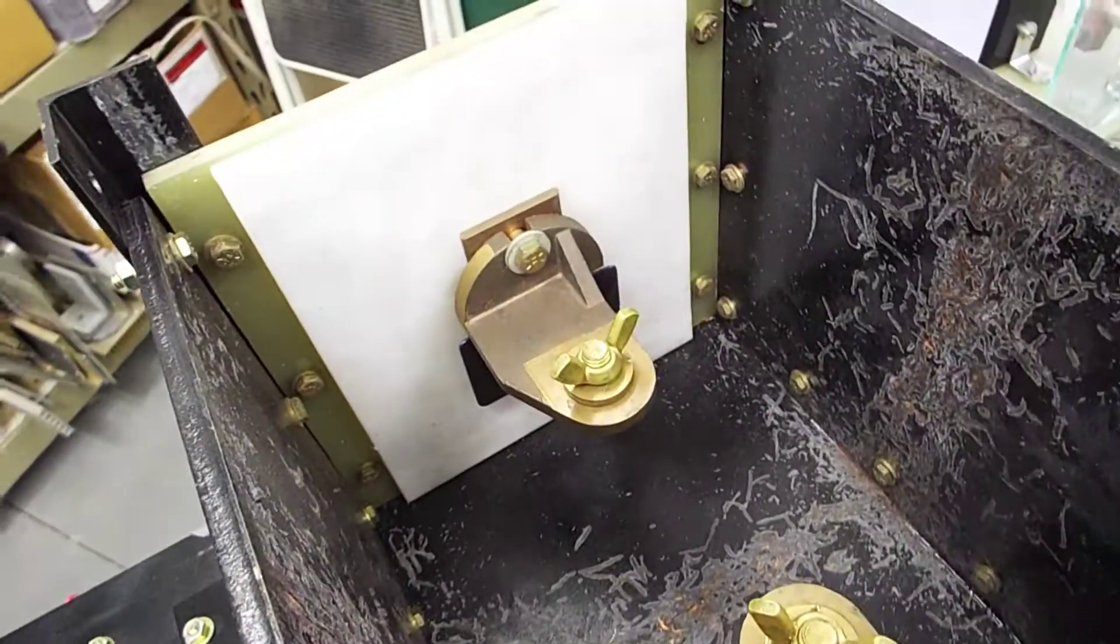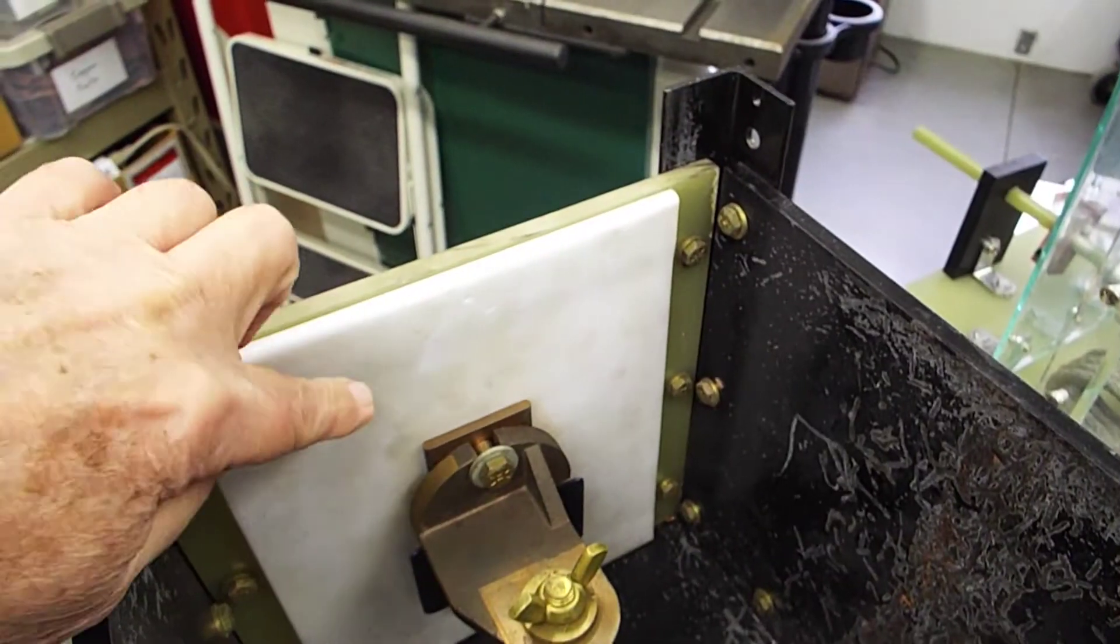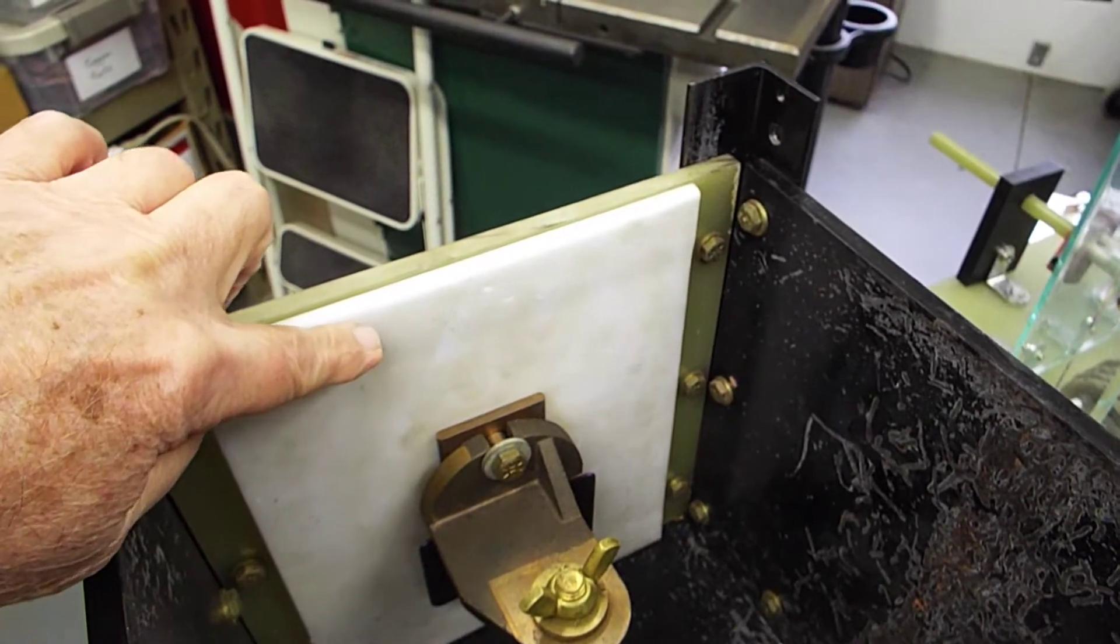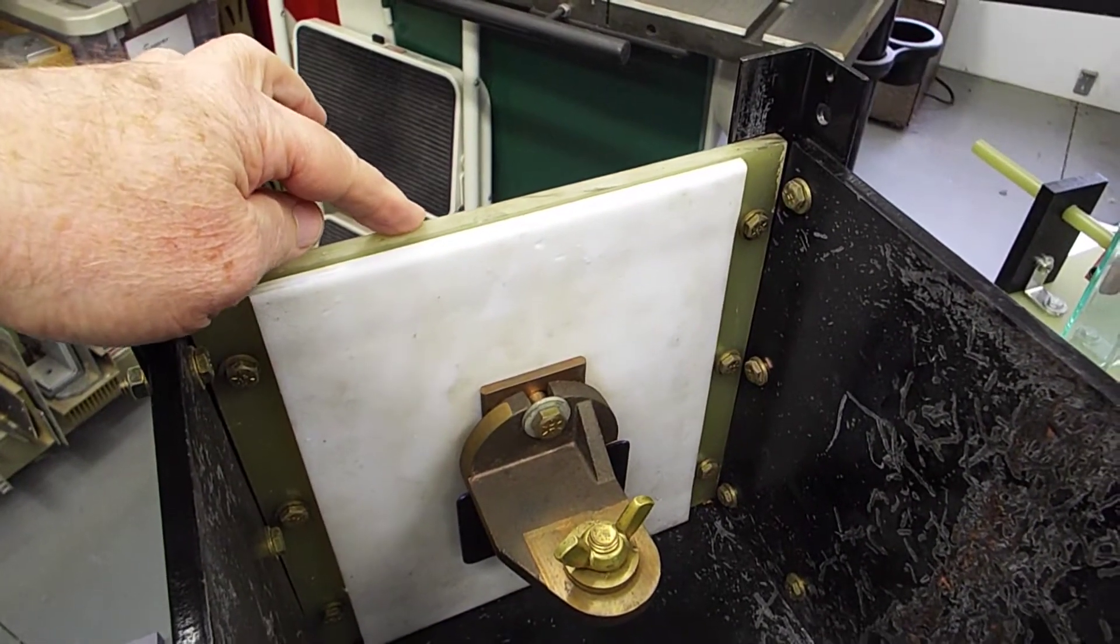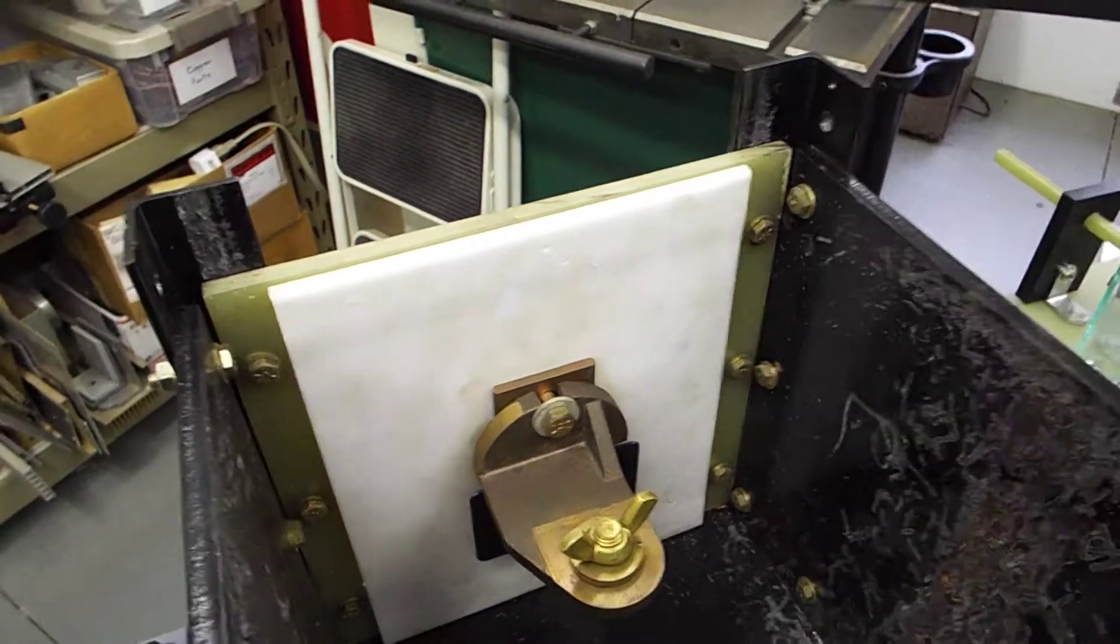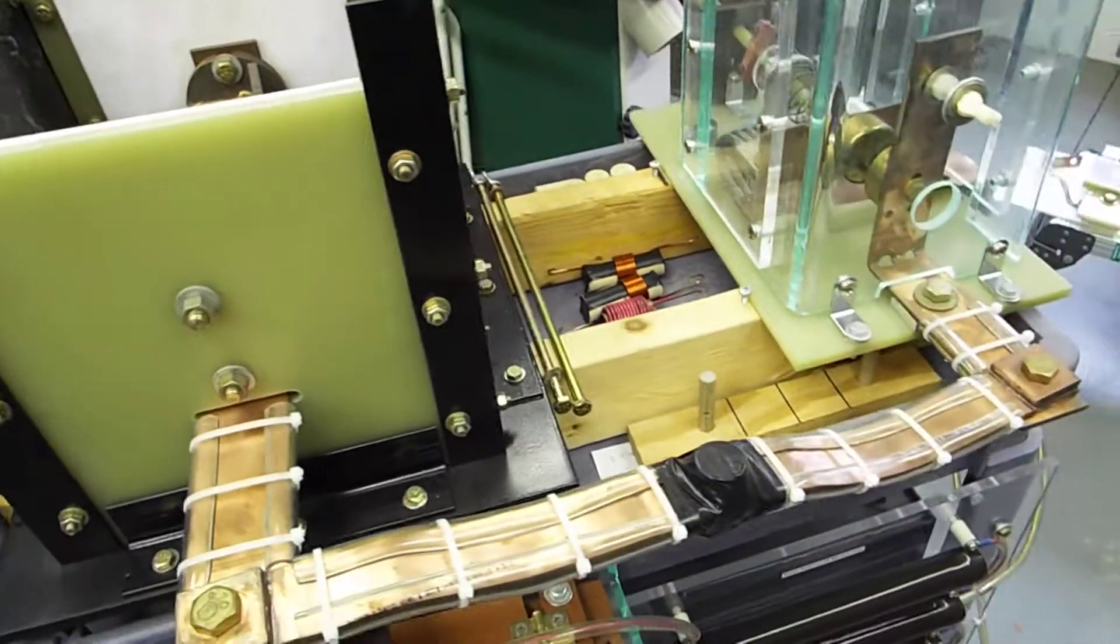And as I stated earlier, these walls is a two-layer sandwich. The white is HDPE. And the green is G10, 3/8 inch G10.